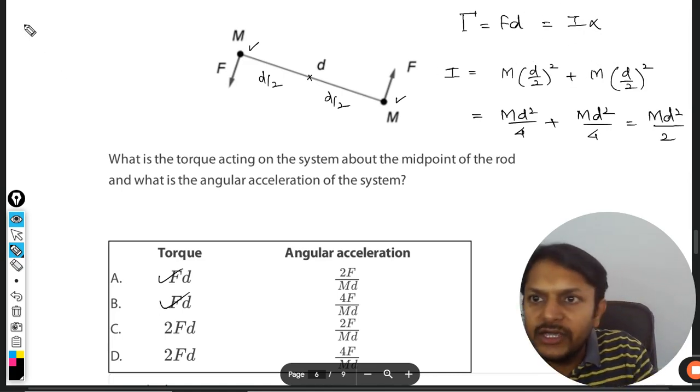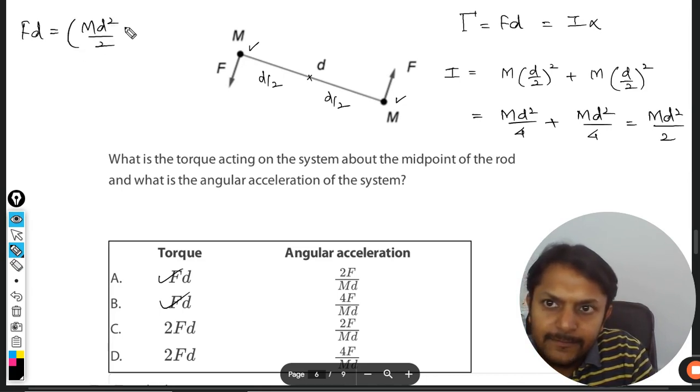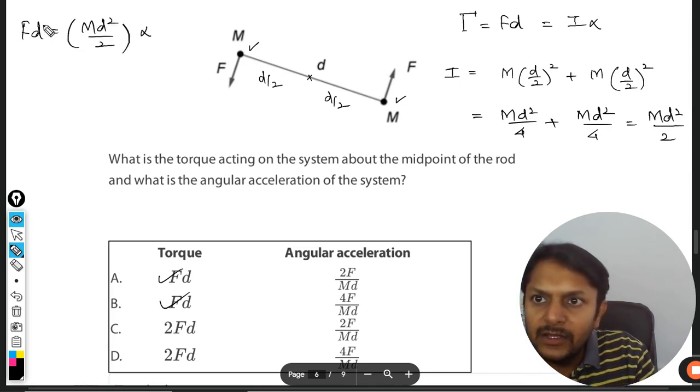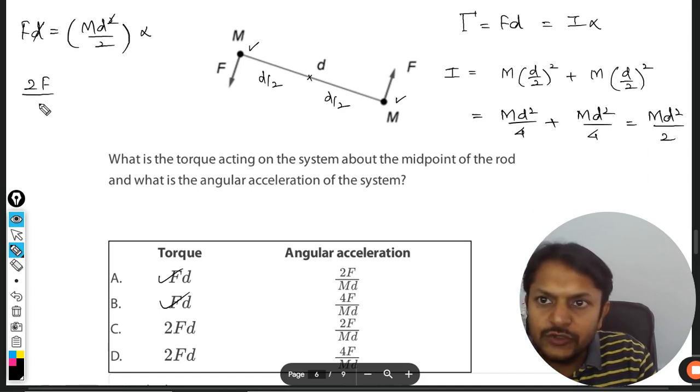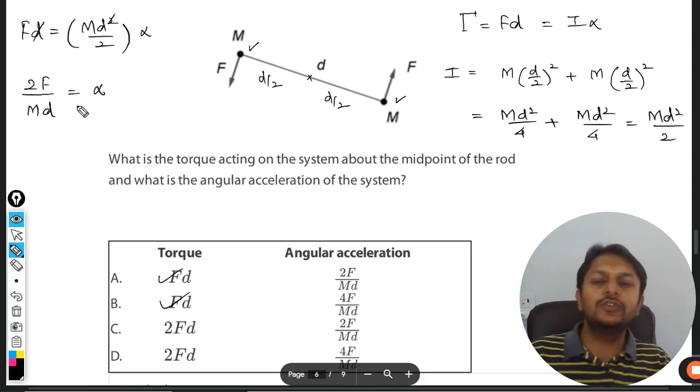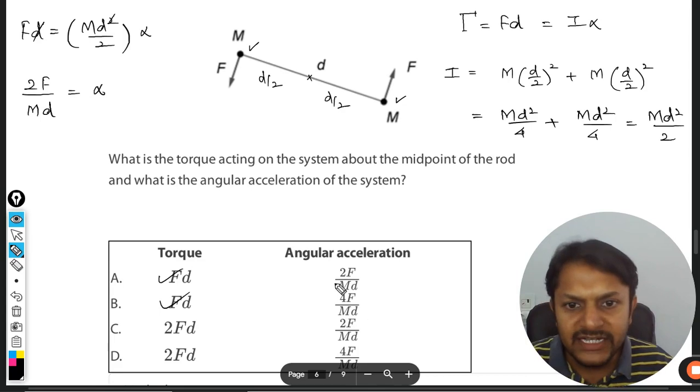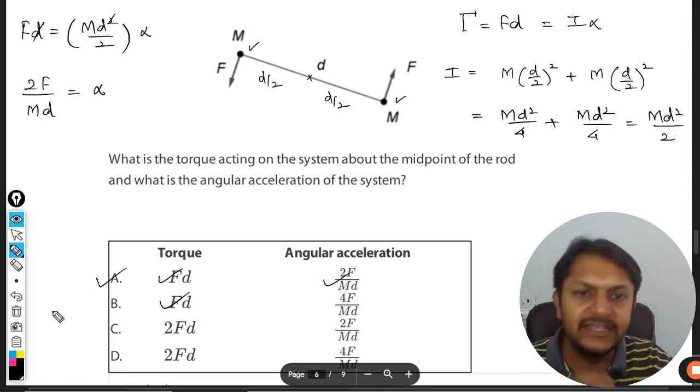Torque is F into d is equal to I alpha. d and d gets cancelled out, 2 F, 2 is cross multiplied, M and d goes to the denominator. So alpha is equal to 2F by Md. Hence A is the correct answer for this question. This is how we do this question.